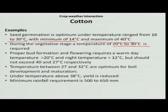Cotton is one of the important crops cultivated for fiber. It comes under C3 type plants based on the photosynthesis process. The optimum temperature for seedling emergence is 18 to 30 degree Celsius, with a minimum of 14 degree Celsius and a maximum temperature of up to 40 degree Celsius.